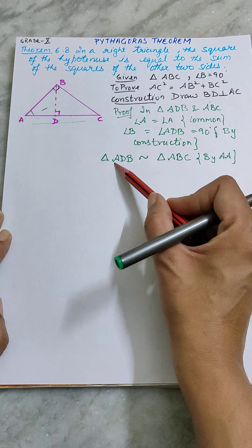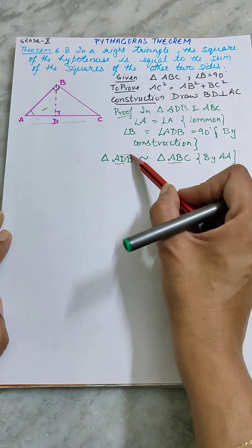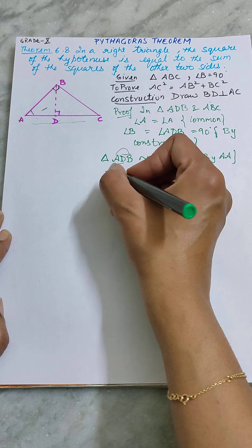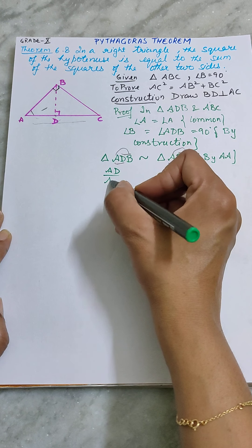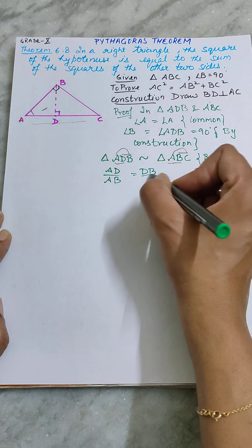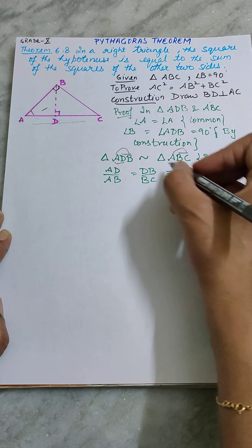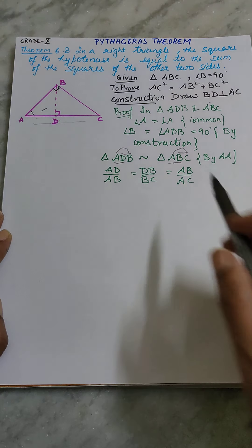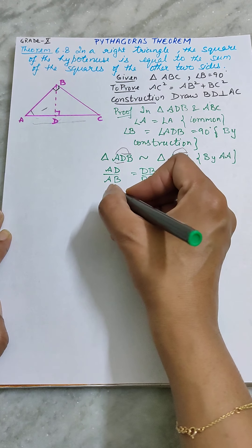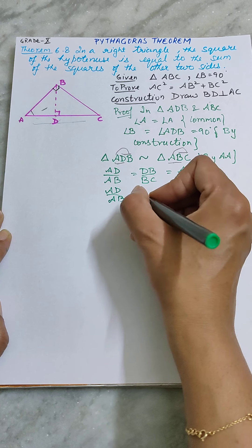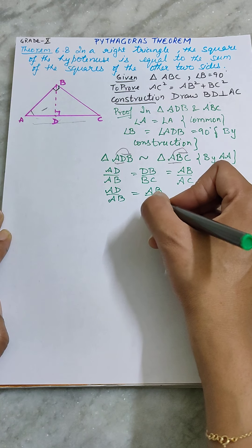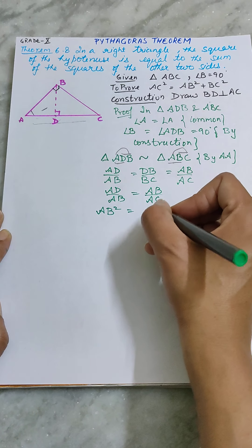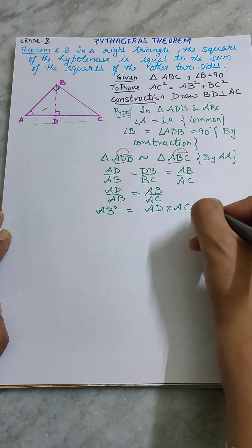Sides proportion mein likhne ka method yeh ki first two alphabets, then last two alphabets upon mein, and then first and last. Now I can write down AD upon AB and DB upon BC equals to AB upon AC. Aapko dekh ke hi pata chal raha hai ki first and last ratio agar hum consider karein, toh in dono ko multiply karke hamara AB square aa raha hai. When I am multiplying, cross multiplying, then AB square equals to AD into AC. Mark this as a first.